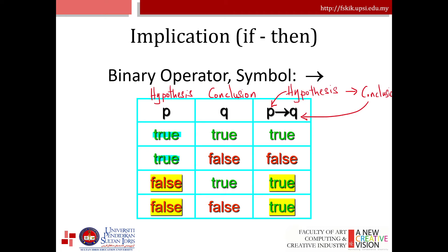The proposition P implies Q, denoted P → Q, is called implication. It is false when P is true and Q is false, and true otherwise. In P implies Q, P is called the hypothesis and Q is called the conclusion.